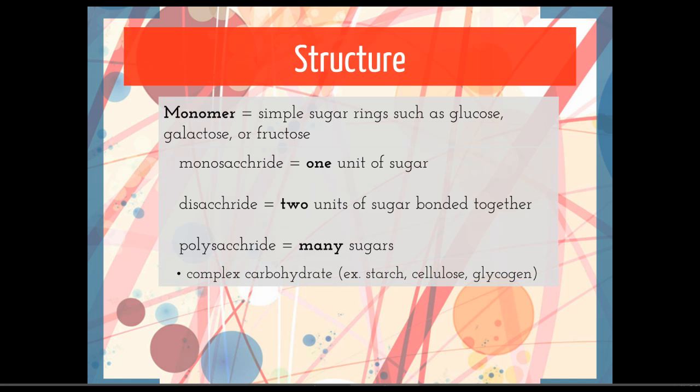Polysaccharides are better known as complex carbohydrates. So when you eat pasta, for example, that's full of starch. Starch is a polysaccharide—many glucose rings put together—as opposed to something simple like sucrose, which is just two units of sugar bonded together.